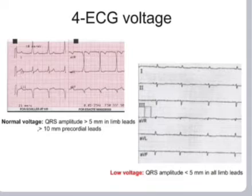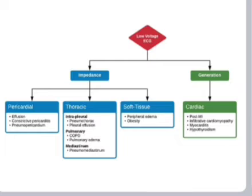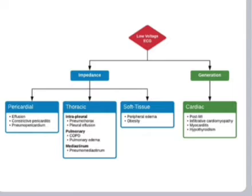ECG voltage: normal QRS amplitude is above 5 mm in limb leads and more than 10 mm in precordial leads. Less than 5 mm in all limb leads is called low voltage. Low voltage ECG can have impedance or generation issues. Generation issues include MI, infiltrative cardiomyopathy, myocarditis, and hypothyroidism. Impedance issues include pericardial effusion, constrictive pericarditis, pneumopericardium, thoracic issues, and soft tissue problems like peripheral edema, skin edema, and obesity.